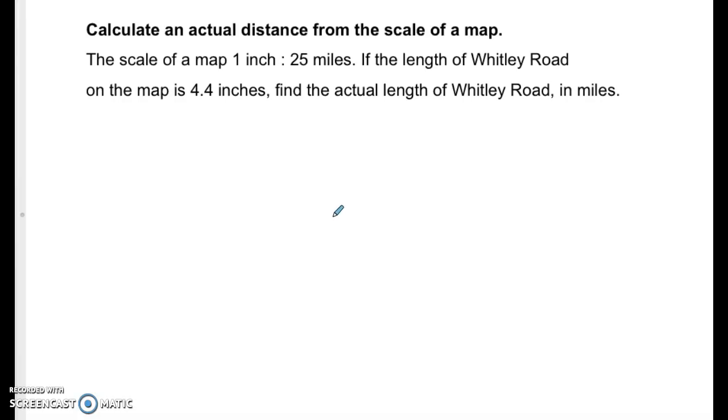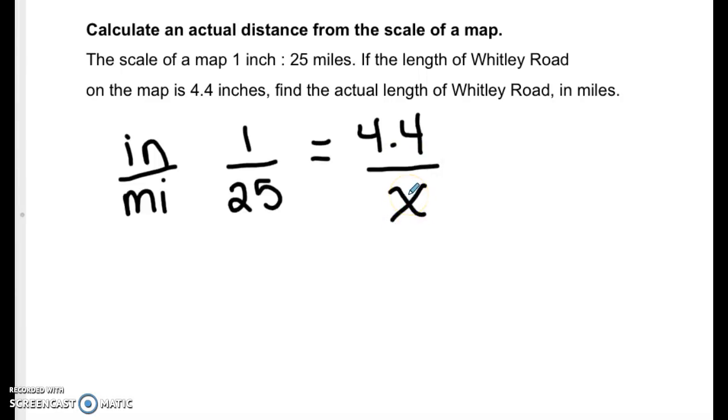So to do this we're going to say we have our inches over our miles. So 1 inch to 25 miles is equal to 4.4 inches over x. So for this we want our map over our actual. So we can also include that because that will help you later on.